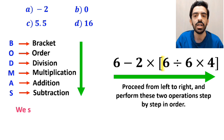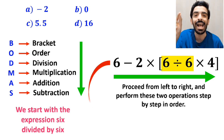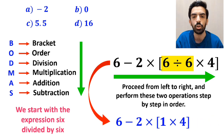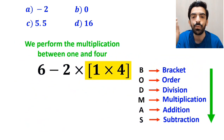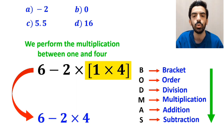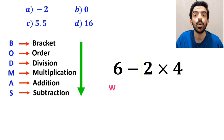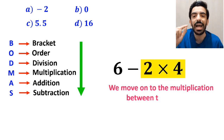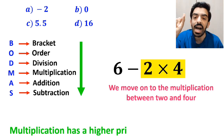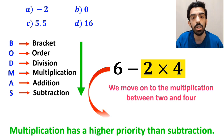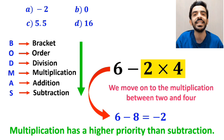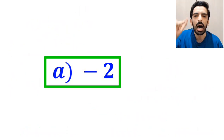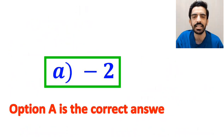First we solve 6 divided by 6, rewriting as 6 minus 2 times 1 times 4 inside the brackets. Then we multiply 1 and 4 to get 6 minus 2 times 4. Next, multiplication has higher priority than subtraction, so we multiply 2 and 4 to get 6 minus 8, and finally we get the answer negative 2. Therefore, option A is the correct answer to this question.